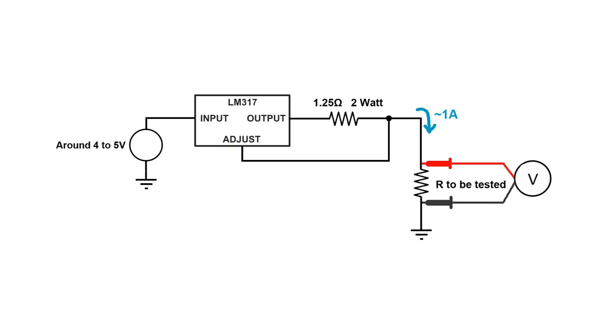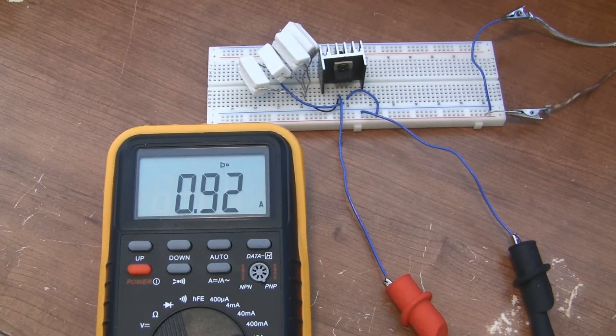Now, in reality, you'll never find a precise 1.25 ohm power resistor, so the current won't be exactly 1 amp. So here's what you have to do. First, use your multimeter to measure the actual current that you're getting out from the circuit. In my case I got 0.92 amps.